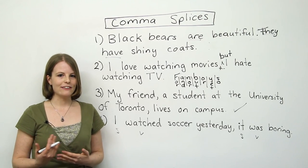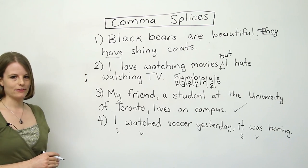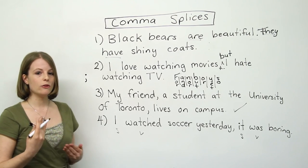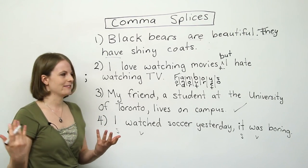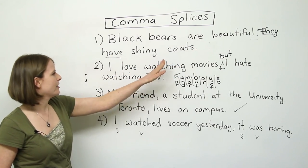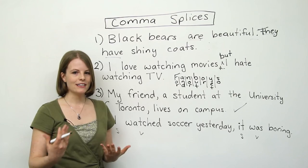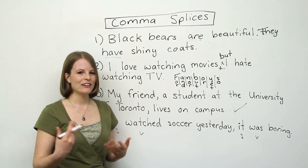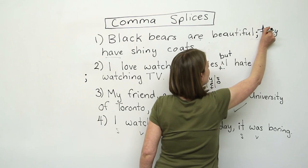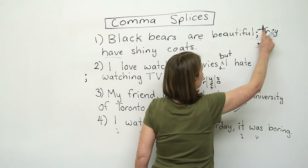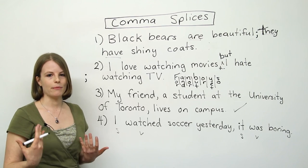Number three was correct, so there's nothing to fix there. A third way to correct a comma splice is to use a semi-colon. A semi-colon is a piece of punctuation with a dot at the top and a comma at the bottom. We use semi-colons when we have an idea and we add a further linked idea to it. For example: 'Black bears are beautiful; they have shiny coats.' Note that you don't need a capital letter after a semi-colon.